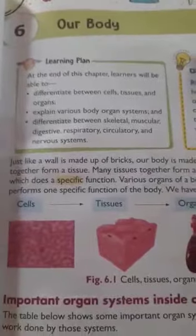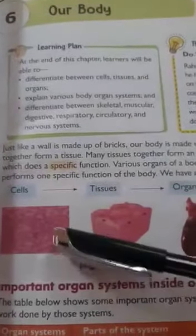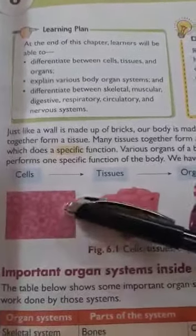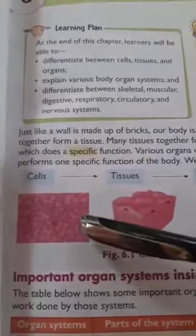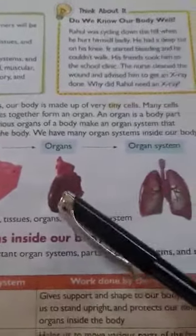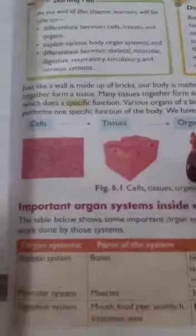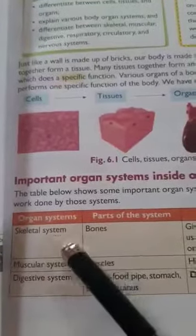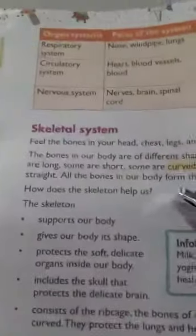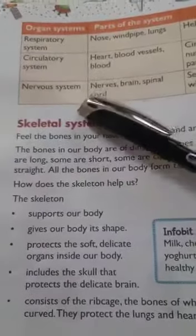In today's video, we have seen the organs of our body. We started from cells — cells are the unit of our organs. Cells together form tissues, tissues together form organs, and organs make organ systems. The organ systems we covered today are the skeletal system, muscular system, digestive system, respiratory system, circulatory system, and nervous system.